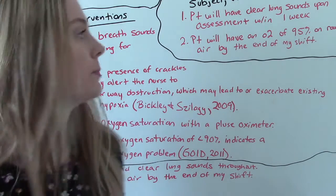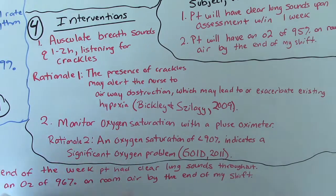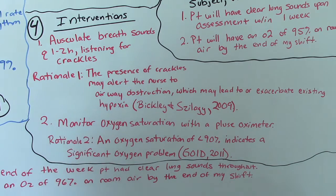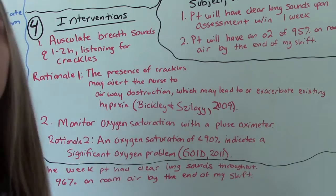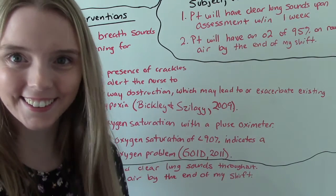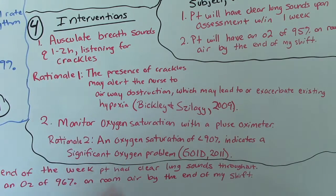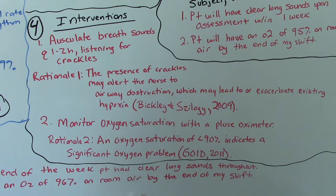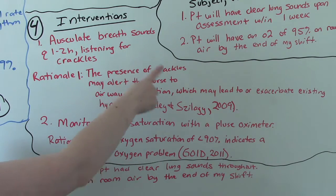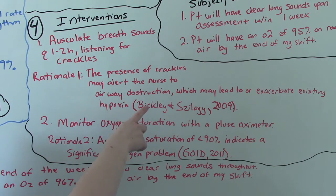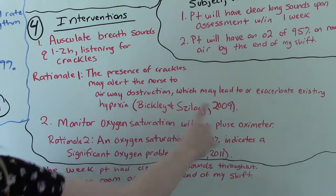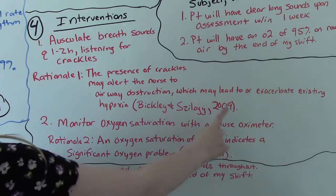So what I chose were auscultating breath sounds every one to two hours and listening for crackles. Why did I choose that? Because our goal is for them to have clear lung sounds. How are we going to know that if we're not listening to their lungs? See how they go together? So this is our intervention, and then every intervention has a rationale at the end of it. And this is in your book in the italicized words right after. So the rationale is the presence of crackles may alert the nurse to airway obstruction, which may lead to or exacerbate existing hypoxia. And then I have to cite it, because I didn't come up with it on my own. That's from our book, so we need to cite it.